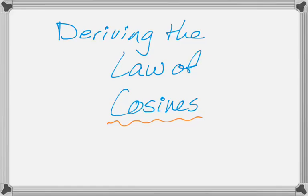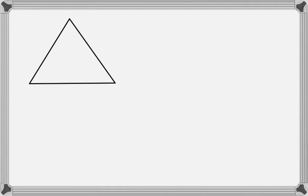In this video we're going to be deriving the law of cosines, which is surprisingly easy to derive considering how useful it is in the long run. So to derive it, first we need a triangle.